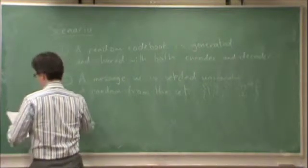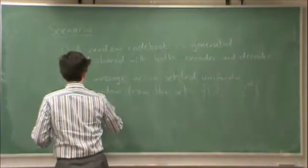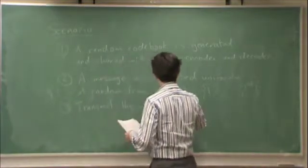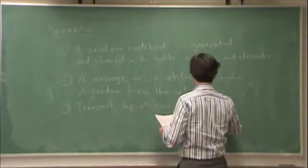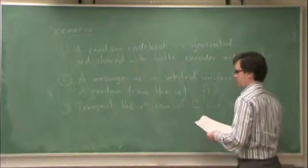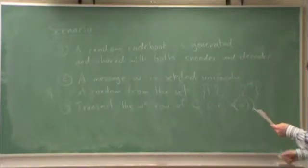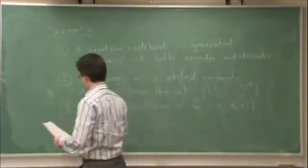Okay, three: transmit the w-th row of c, i.e., that would be x and w, so the w-th code word.